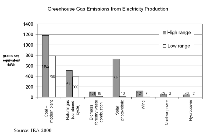The IPCC Fifth Assessment Report emphasizes that behavior, lifestyle, and cultural change have a high mitigation potential in some sectors, particularly when complementing technological and structural change. In general, higher consumption lifestyles have a greater environmental impact. Several scientific studies have shown that when people — especially those in developed countries — wish to reduce their carbon footprint, there are four key high-impact actions they can take.